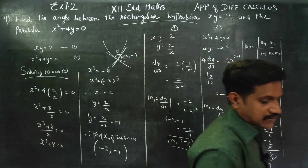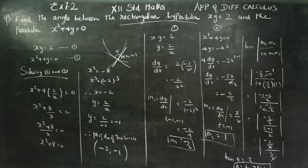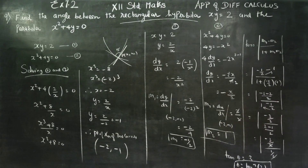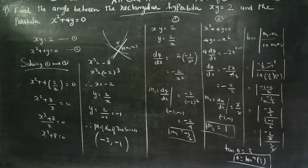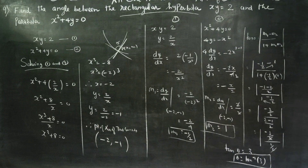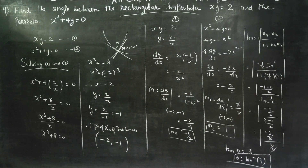Therefore theta equals tan inverse of 3, and this is the angle between the curves. The angle between the curves is actually the angle between the tangents to the curves at the point of contact, with slopes m1 and m2. The stages are: solve the two equations to find the point of intersection, find m1 and m2 for the two curves, then use the formula tan theta equals m1 minus m2 by 1 plus m1 m2.